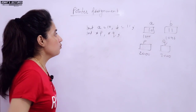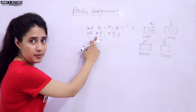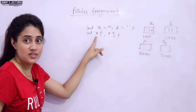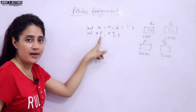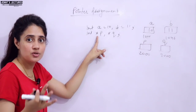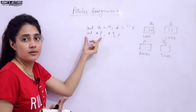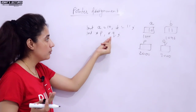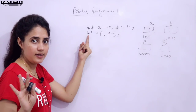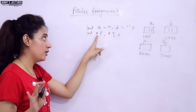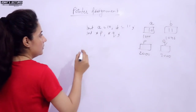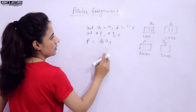Now, the asterisk sign used in pointer declaration — like 'int *p' — tells the compiler that p is a pointer. It is not acting as an indirection operator here; it is just part of the declaration syntax. Don't get confused: in a declaration, the asterisk does not mean 'value at this address.' That meaning applies only when you use it in an expression after declaration.